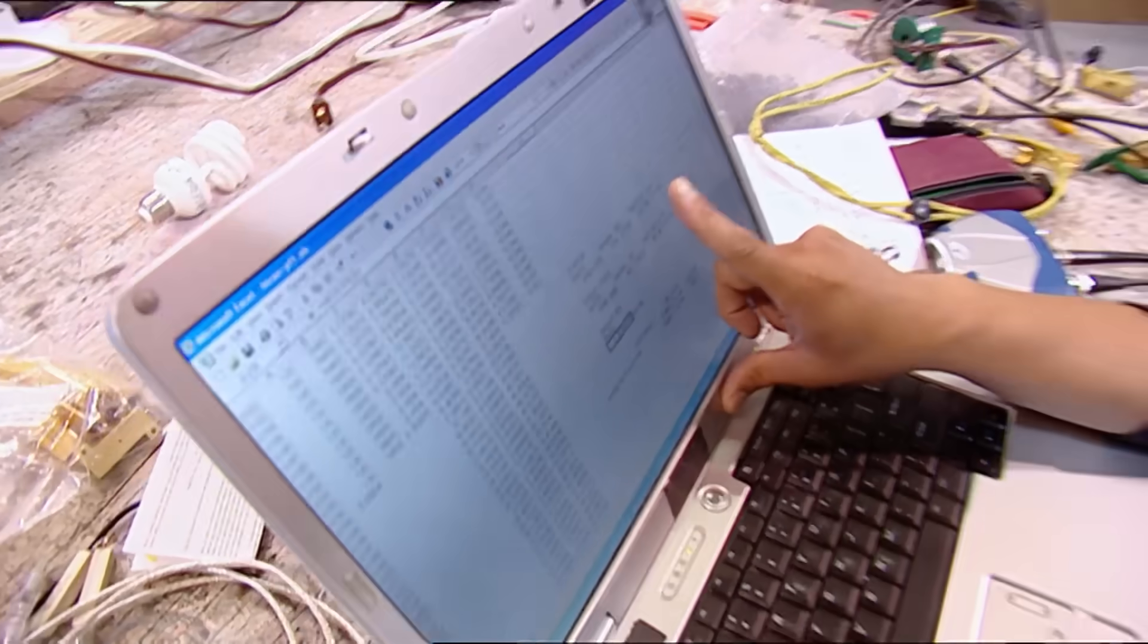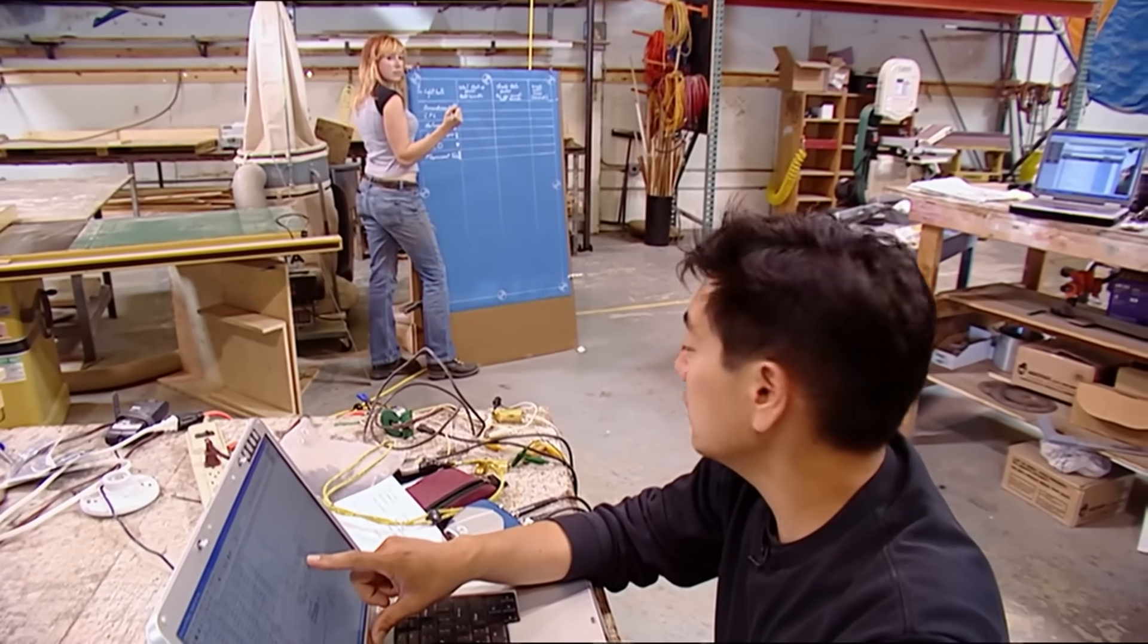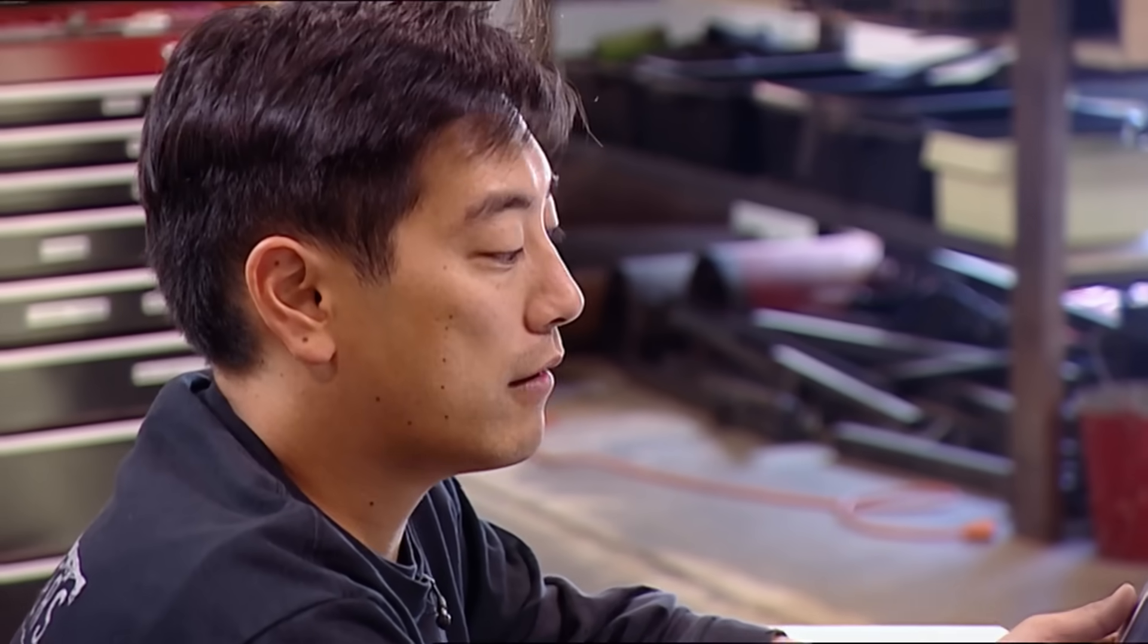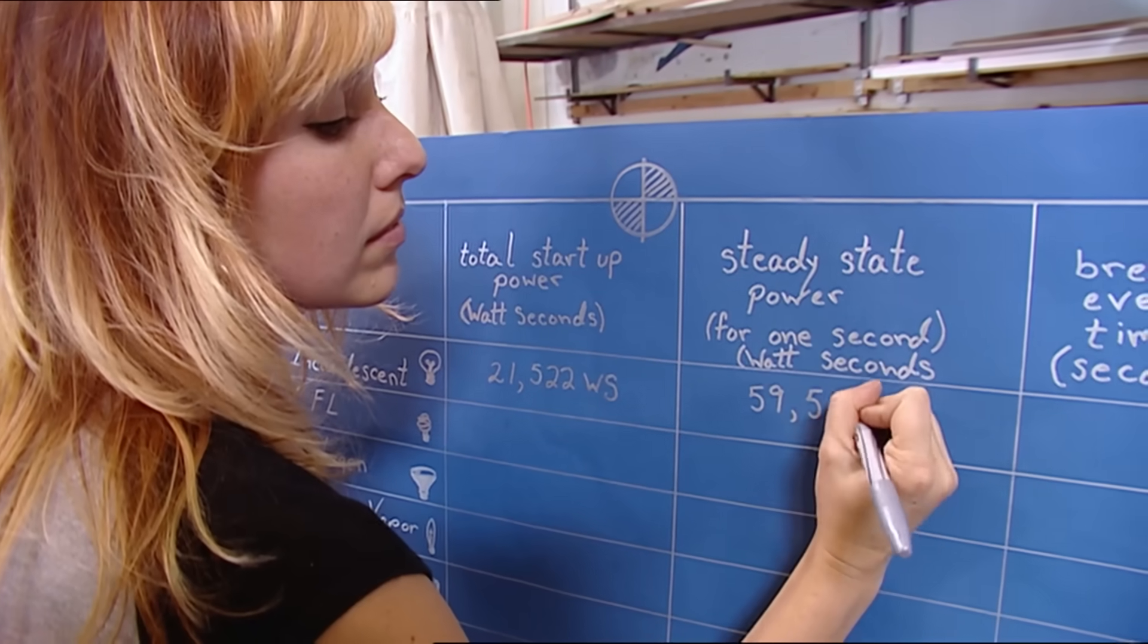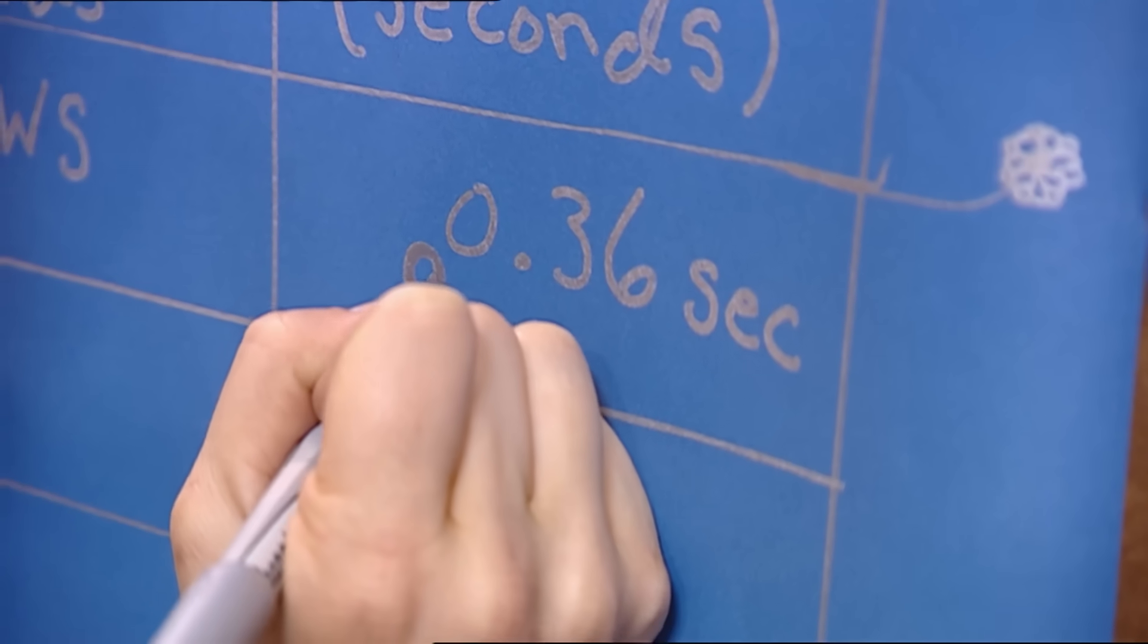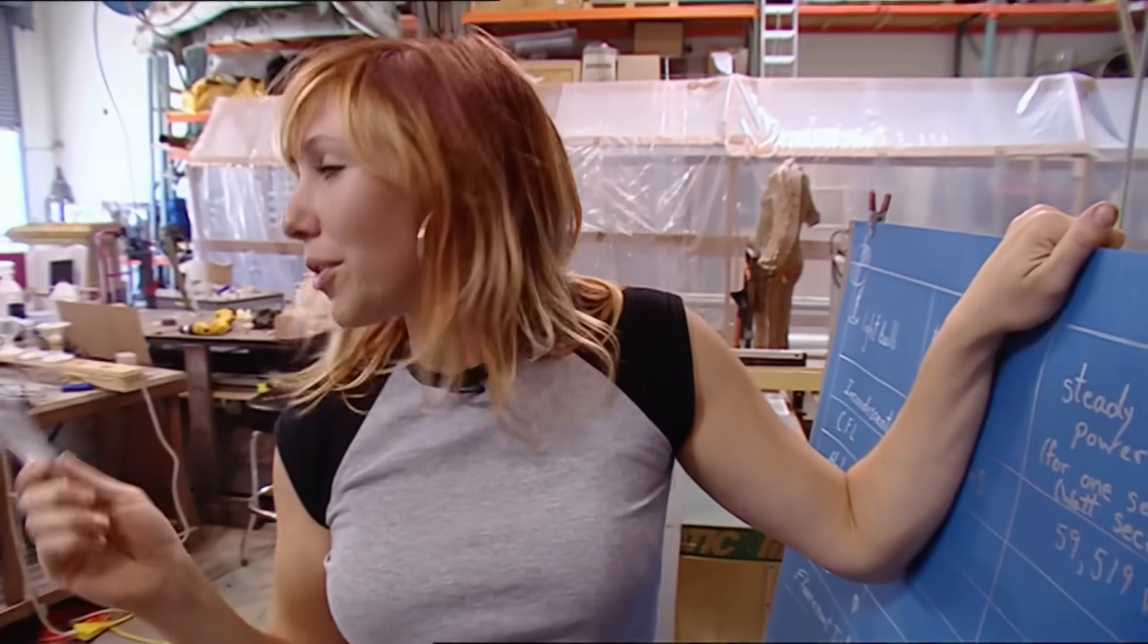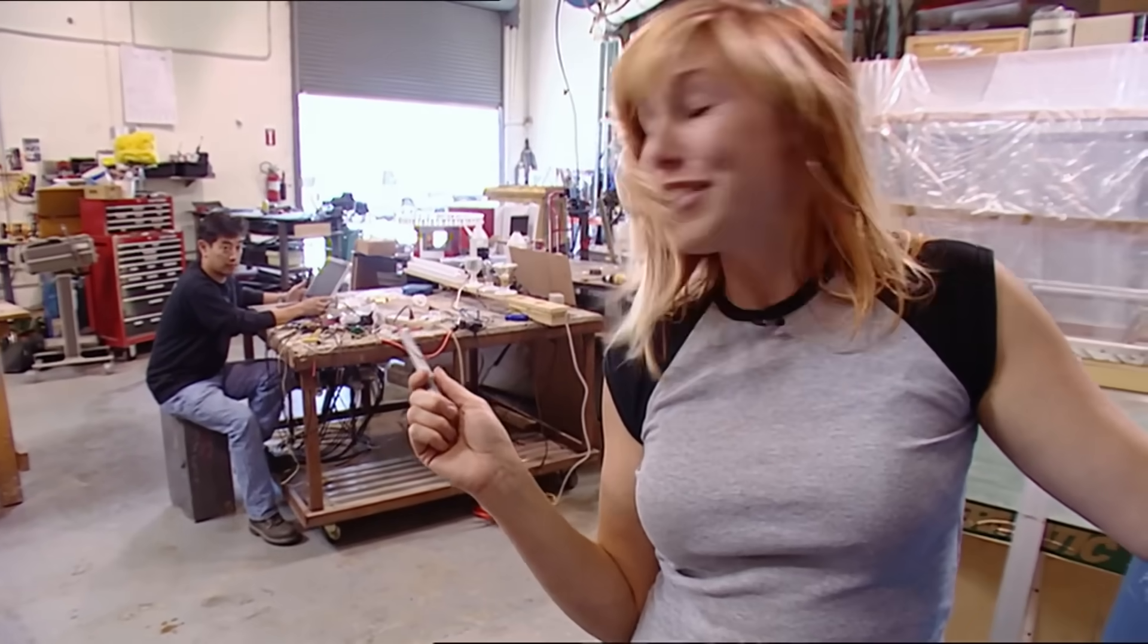So, crunch the numbers and here's what I got for the incandescent. Total power used during startup is 21,522 watt seconds. Total power for one second is 59,519 watt seconds. And that makes our break-even time 0.36 seconds. Okay, so from that, I guess that means I'm leaving the room to go make a cup of coffee, it's only worth it for me economically to keep the light on if I come back in a third of a second.